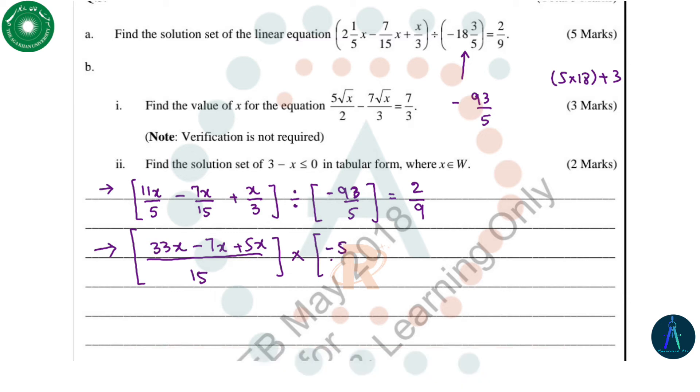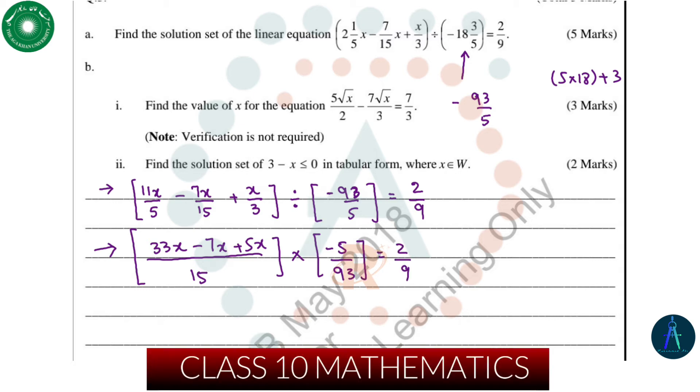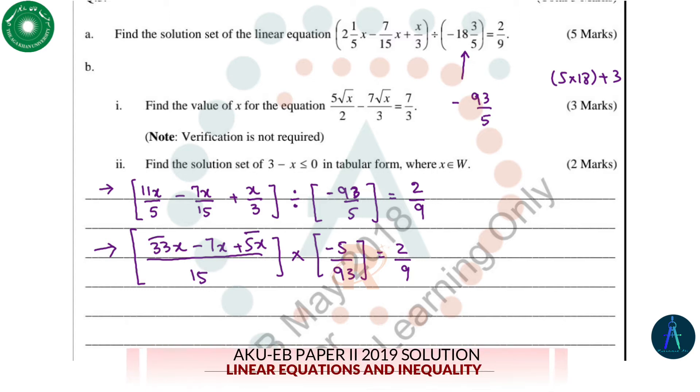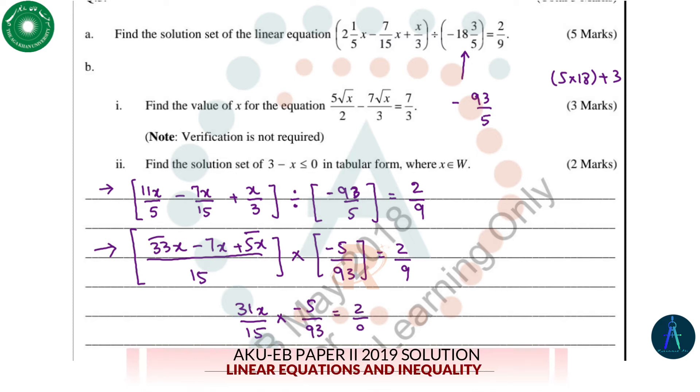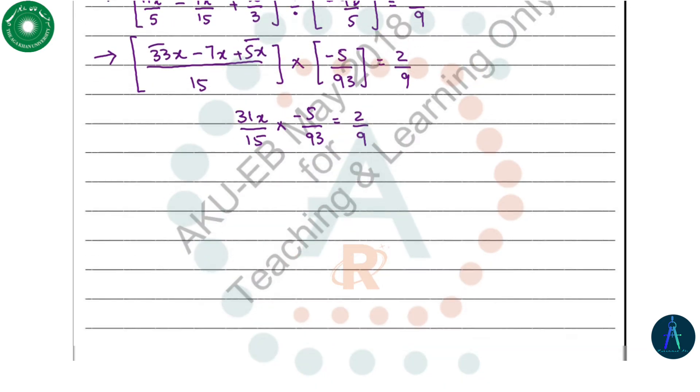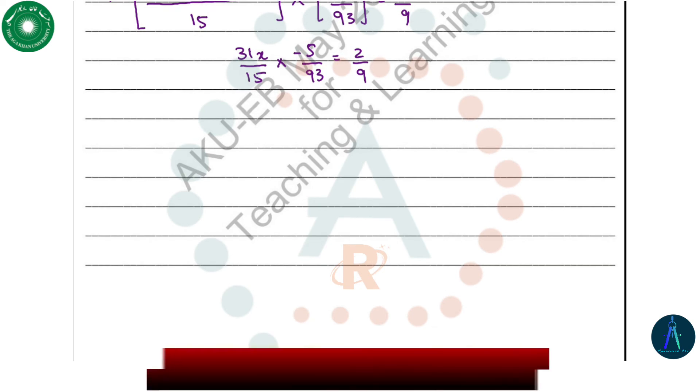And minus 5 over 93, we have reciprocated this expression. If we solve the numerator, 33 plus 5 is 38, and 38 minus 7 will equal 31x divided by 15 multiplied by minus 5 over 93 equals 2 over 9.